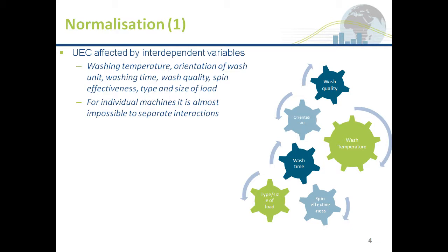For washing machines, any particular unit has a number of interdependent variables: the washing temperature, the orientation of the unit, the wash time, the wash quality, how effective the spin is, and the type and size of load. They're all interdependent — if you change one, it impacts the others. And for an individual machine, it's almost impossible to isolate the specific impacts.